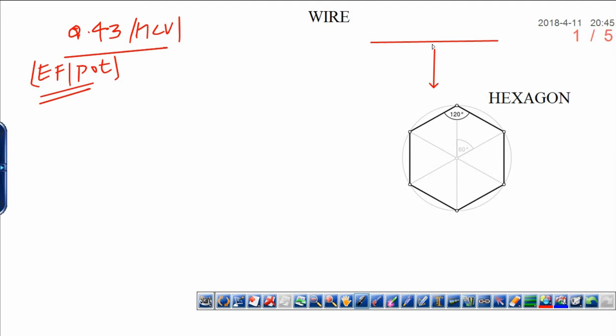Suppose that this is a wire which is uniformly charged. That is why electric field due to wire can be calculated by calculus and it is converted into hexagon, regular hexagon.